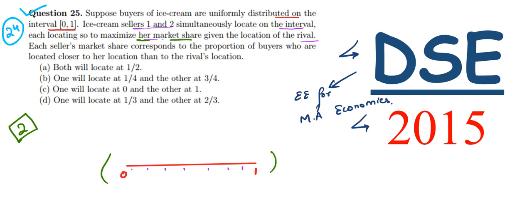Each seller's market share corresponds to the proportion of buyers who are located closer to her location than the rival's location. The buyers will always go to the market which is closer to them.